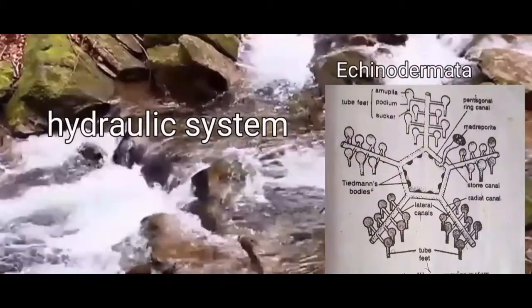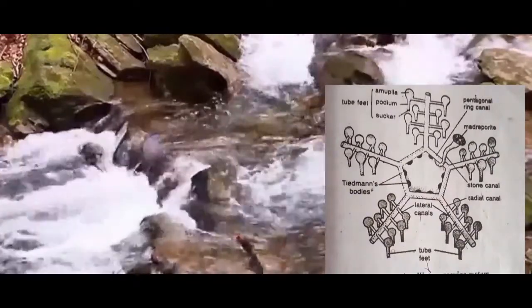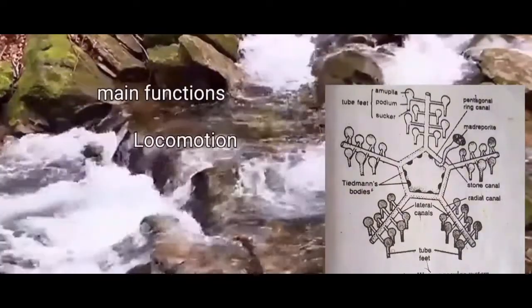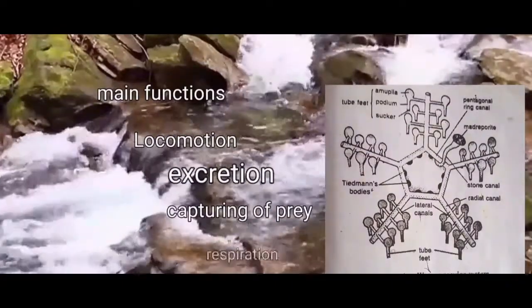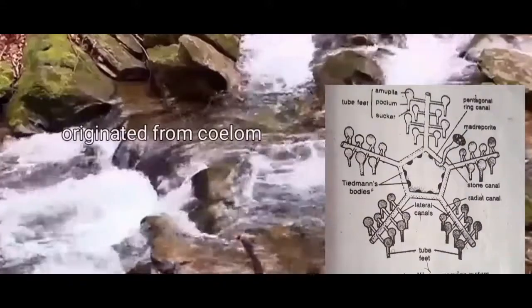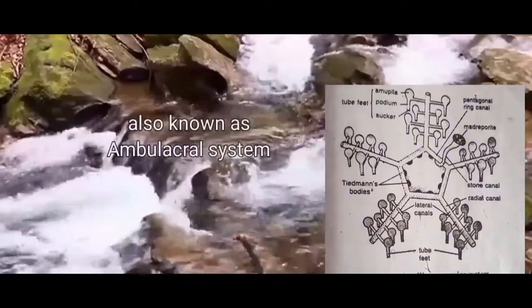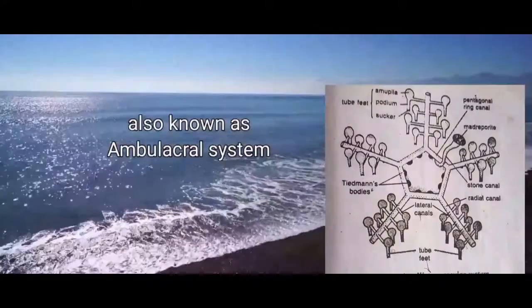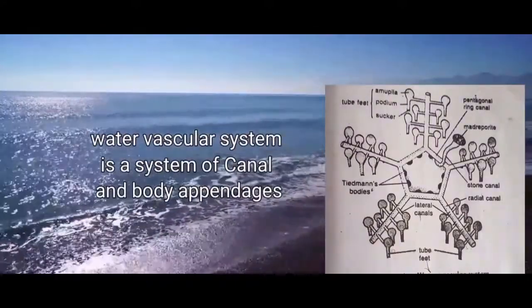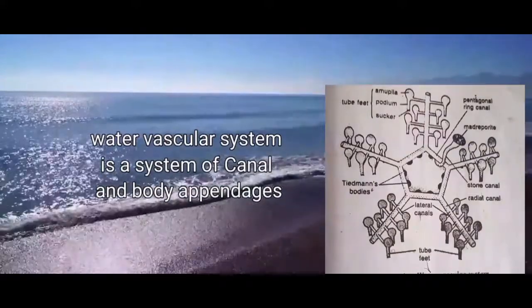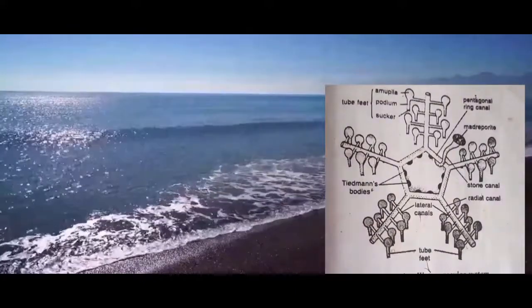Its main functions are locomotion, excretion, capturing of food, and respiration. It is a division of coelom, hence it is originated from coelom. It is also known as the ambulacral system. The water vascular system is a system of canals and body appendages. All species of echinoderms have a similar water vascular system.